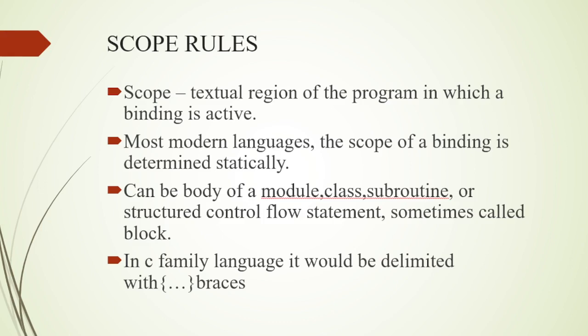When we declare a variable, that particular portion is activated — that is the scope of a variable. In most modern languages, the scope of a binding is determined statically, which is done at compile time itself. Scope can be the body of a module or class, a subroutine, or a structured control-flow statement.